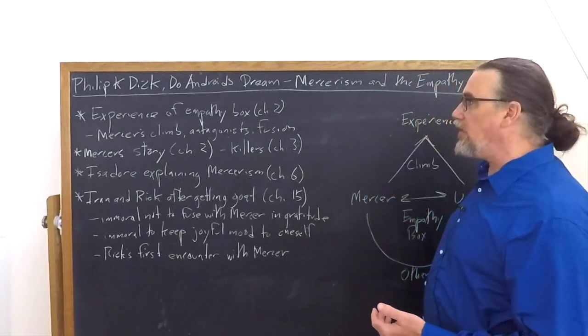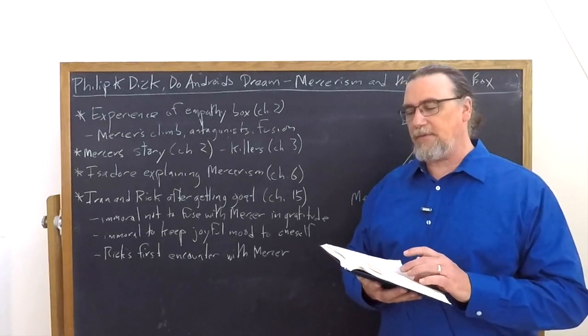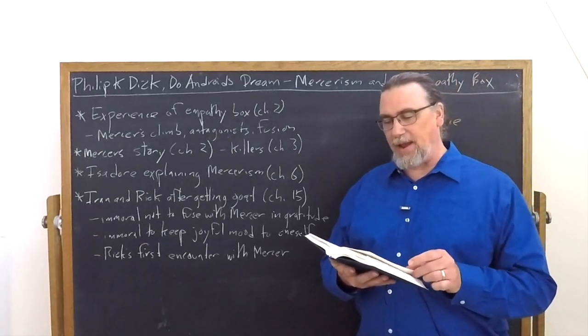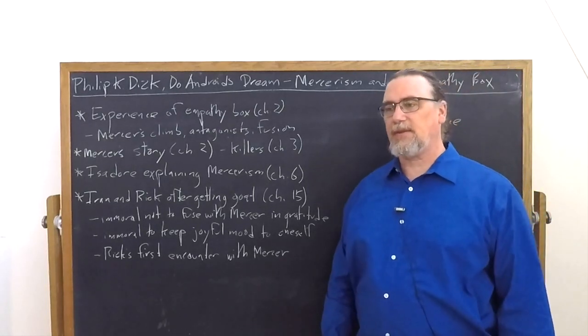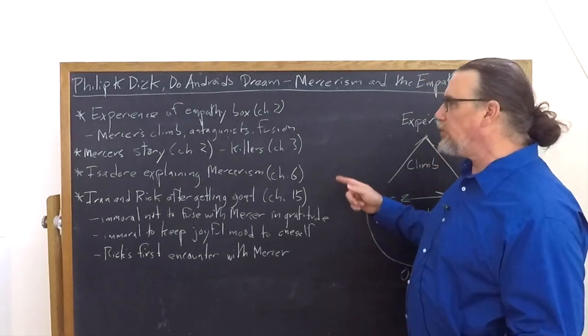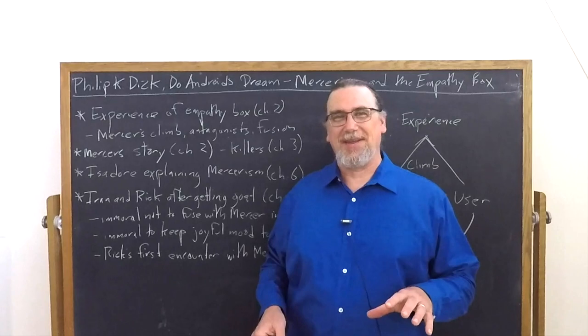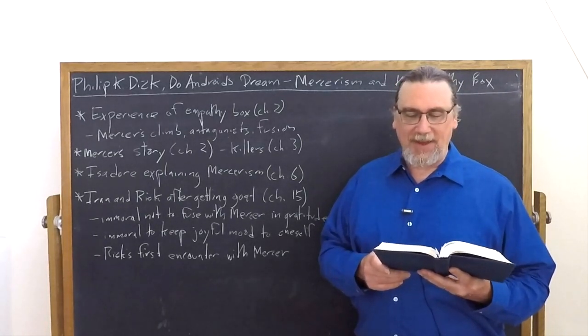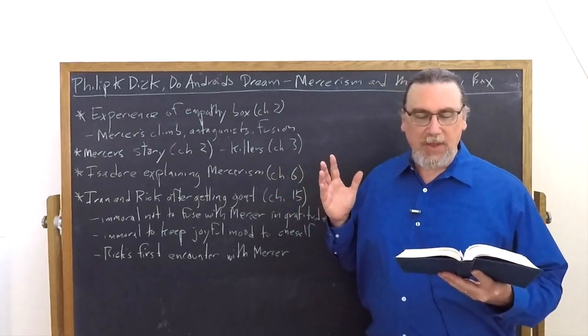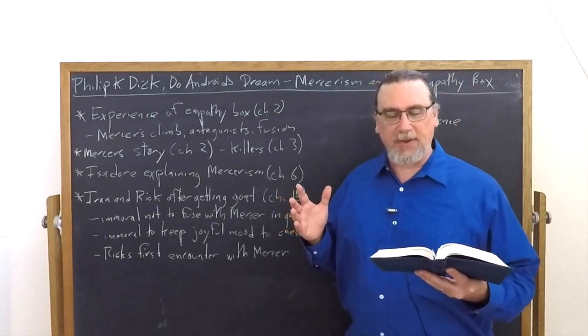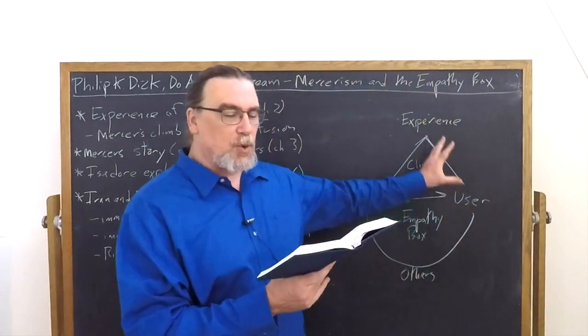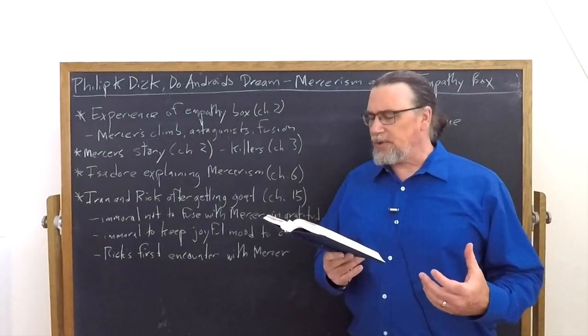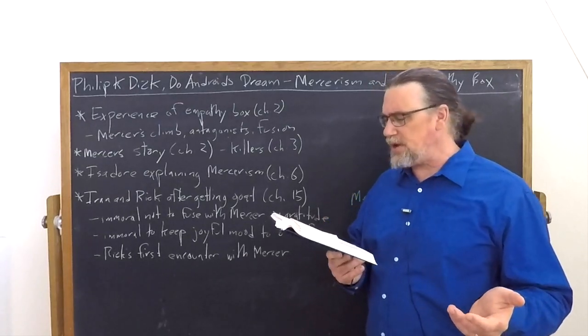Isidore, in explaining Mercerism, notes that the only real exception to kipple is Mercer. He explains to an android: 'No one can win against kipple. It's a universal principle—the entire universe is moving toward a final state of total kippalization, except of course for the upward climb of Wilbur Mercer, which human beings can participate in.' The girl says 'I don't see any relation.' 'That's what Mercerism is all about,' he replies. 'Don't you participate in fusion? Don't you own an empathy box?' After a pause, the girl says carefully, 'I didn't bring mine with me. I assume I'd find one here.'